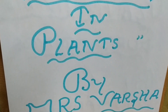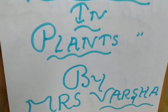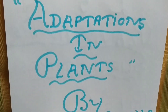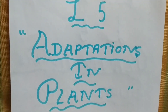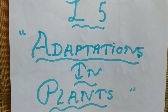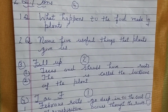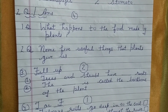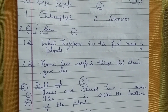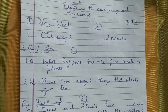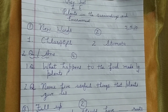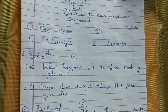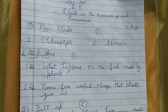Take your copies. Write the date. Lesson 6: Plants in the Surroundings and Environment. Total marks: 10. Question number 1 - New Words.